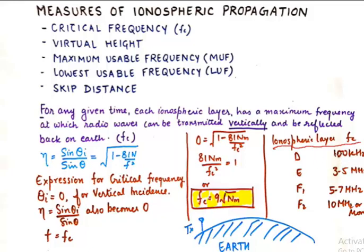Now let's look at some of the key layers' cutoff frequencies at typical values of Nm. D has a cutoff frequency of 100 kilohertz for its typical value of Nm, and E will have a cutoff frequency of 3 to 5 megahertz.